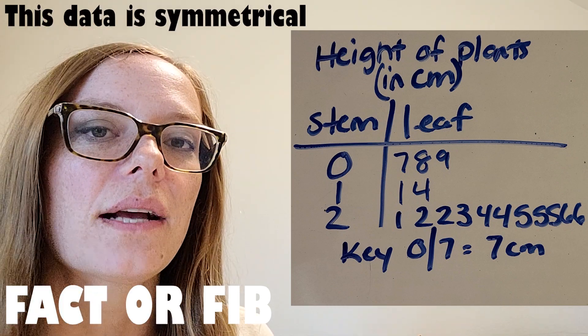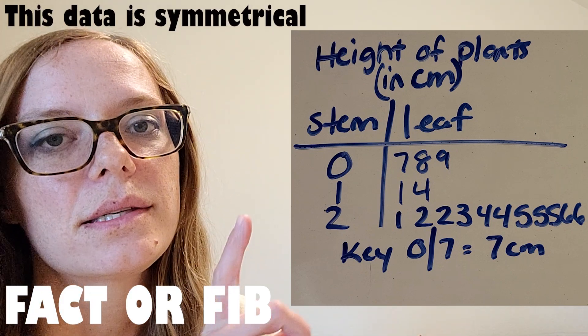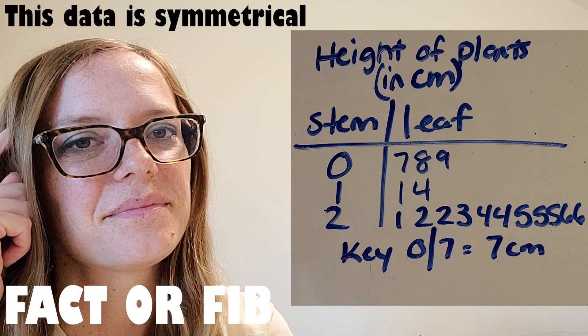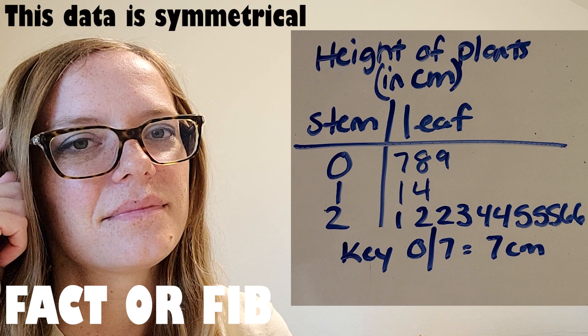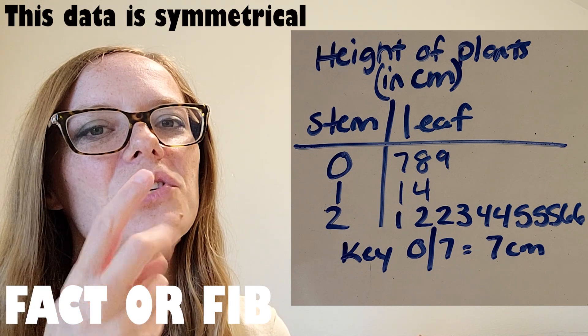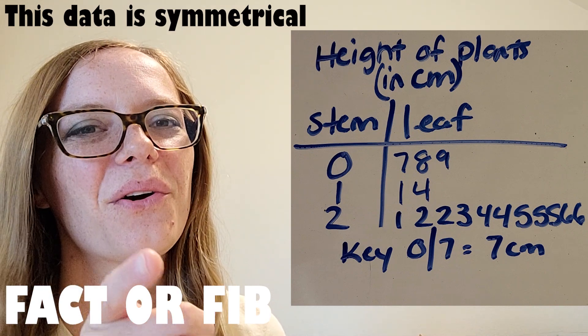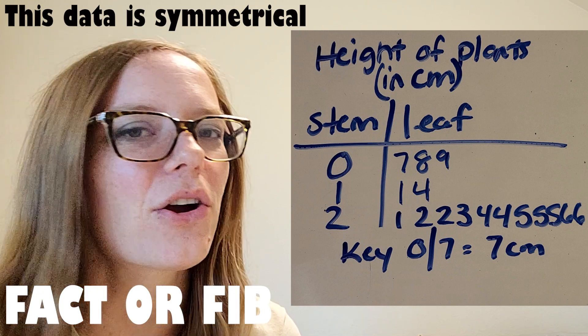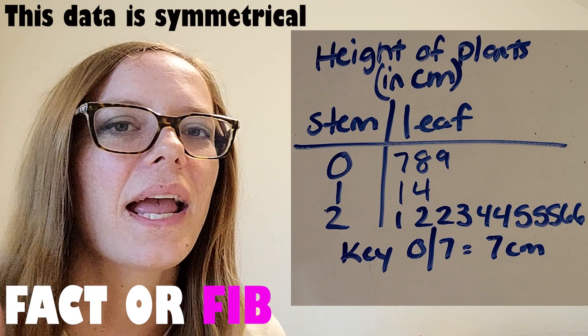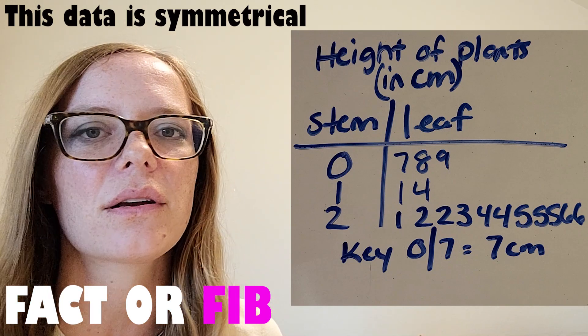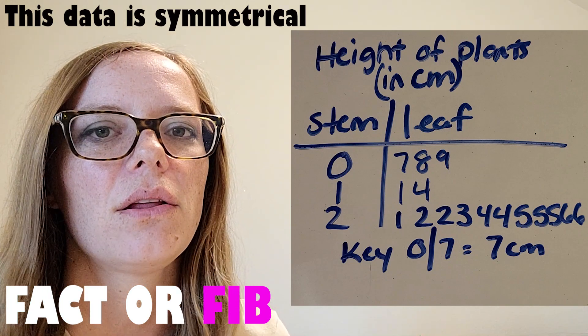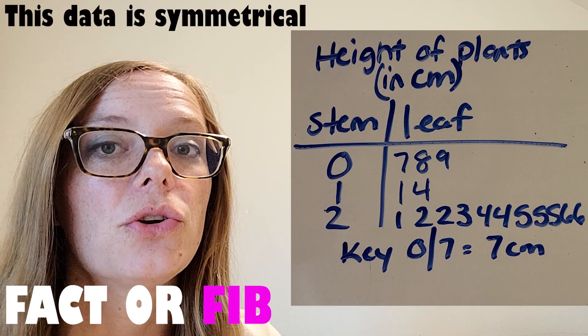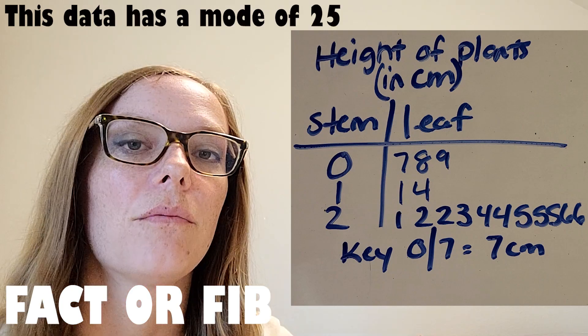Here's the next one. This data is symmetrical. So think about it for a minute. One, two, three, go. I think I heard fib. And that is because this data does not look symmetrical. It looks skewed. And there's a lot more leaves on the two stem than the other stems.